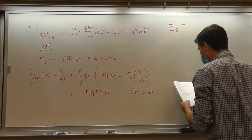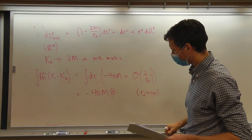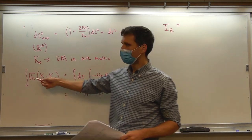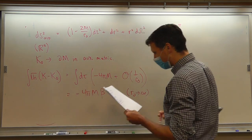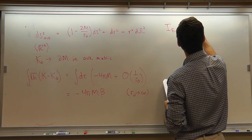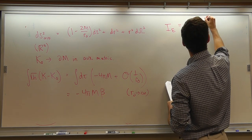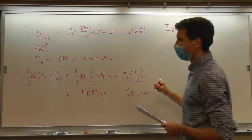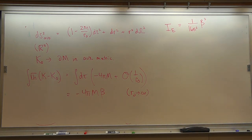Our final answer for the Euclidean action, plugging in β = 8πm and including the 1/(16π) prefactor of the GHY term, gives I_E = β²/(16π²).